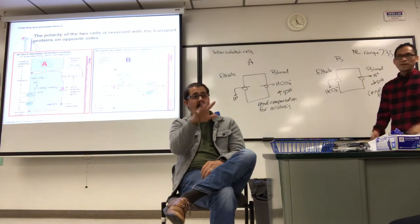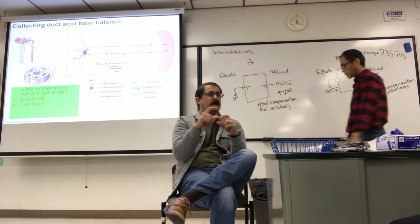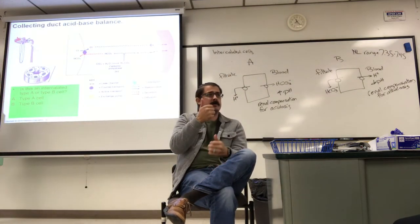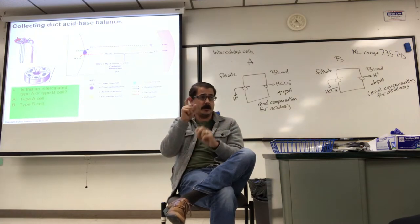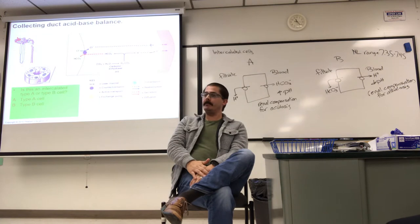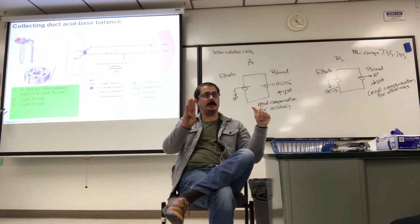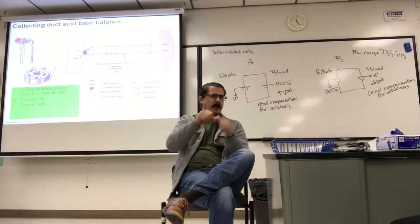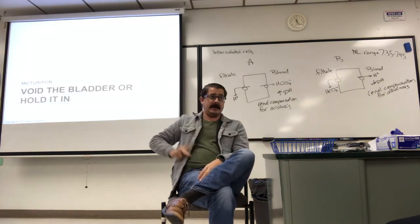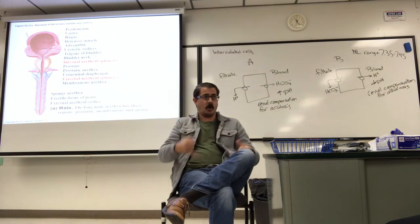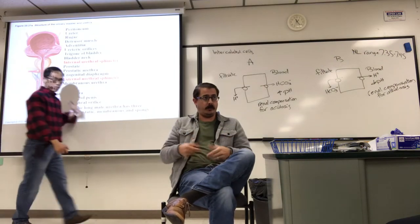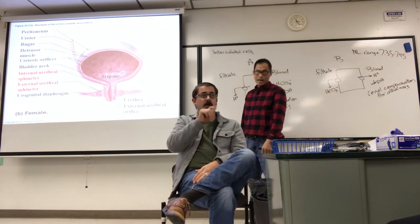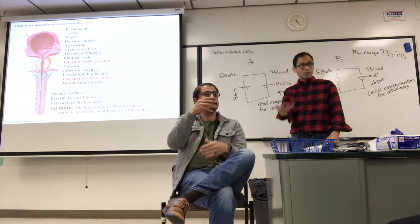Now that we have talked about the collecting duct and the formation of concentrated or dilute urine, if I show you a picture and you know which side is the filtrate and which side is blood, you can determine whether it is a type A or type B cell. B, because you are excreting the base. Once the kidney forms the urine, the ureters carry the formed urine down to the bladder. Remember we have male and female because the urethra is a different size — in the male, the penis contains part of the urethra, increasing the length.